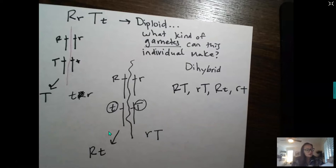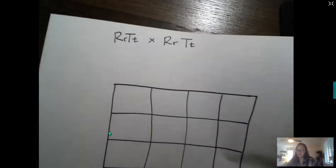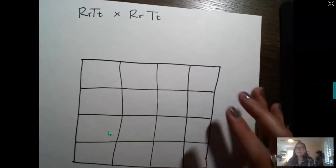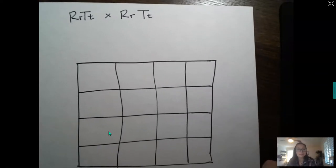So now when we go to set up a dihybrid cross, what we're saying in a Punnett square is what are the different possibilities of offspring from two parents? What is the probability that a certain event will happen? So we need to figure out what are their gametes to know the likelihood that two will come together.